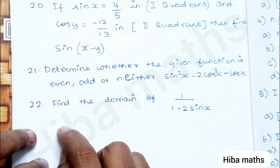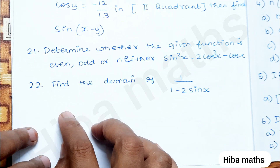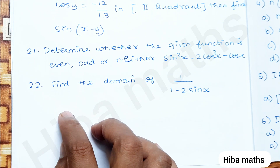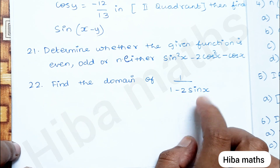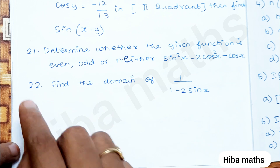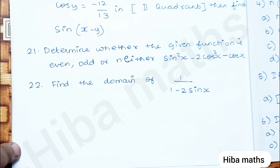21st question: determine whether the given function is even, odd, or neither. Find the domain of 1/(1 − 2sin x). This is a compulsory and important question. Find the range as well — this is an example sum. If there are 3 or 4 such sums, they will appear in the paper, so practice them. Each sum is important — practice all.